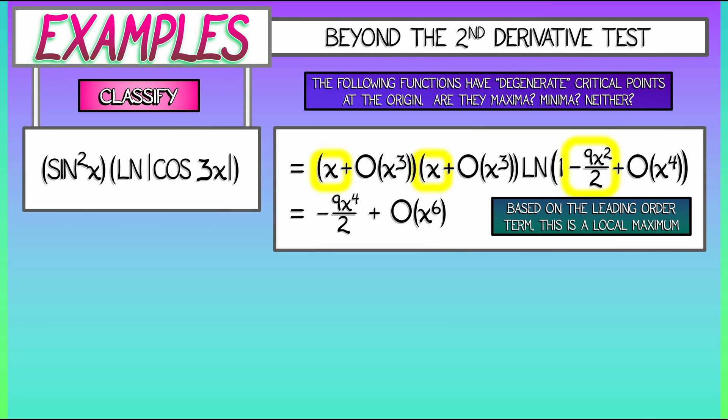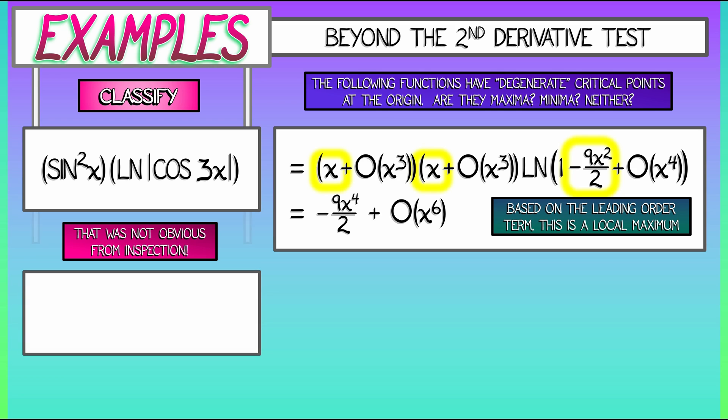Well, that was cool. But it's absolutely not obvious just from looking at that function that we have a local maximum at the origin. The same thing is true with our next example. Consider the function 5 plus x to the fourth divided by the cube root of quantity 1 minus 2x cubed.